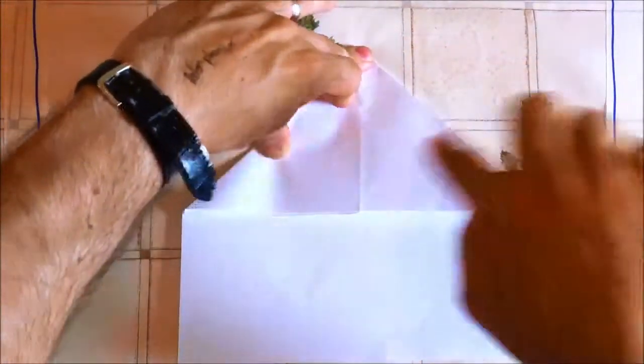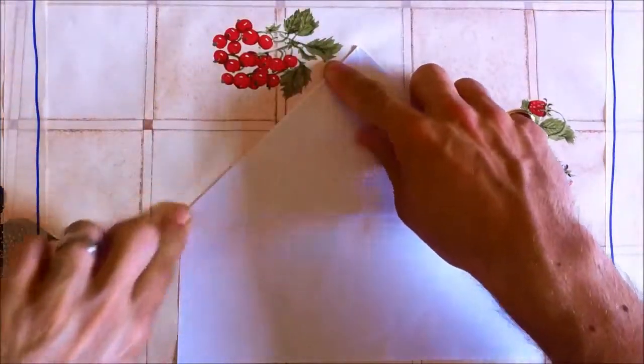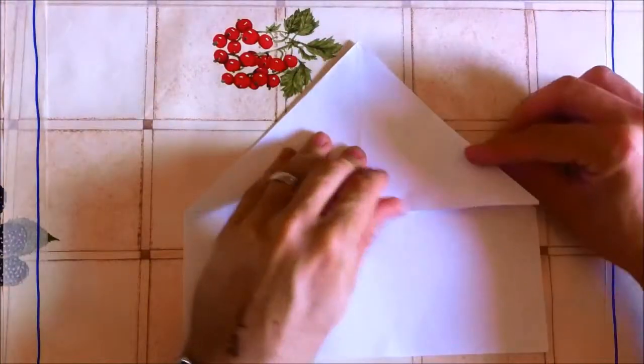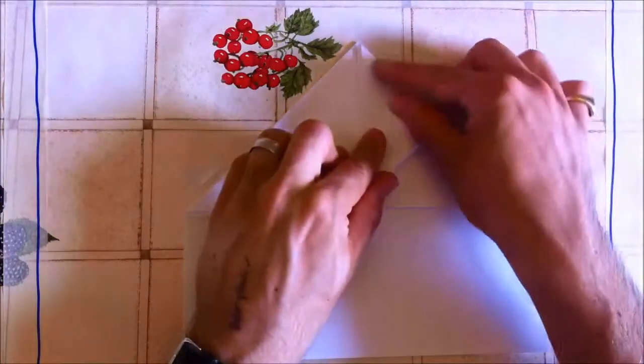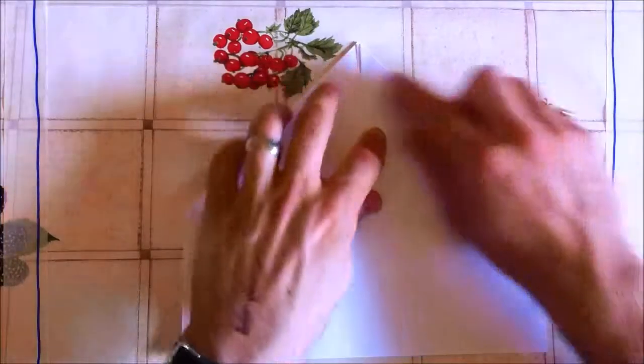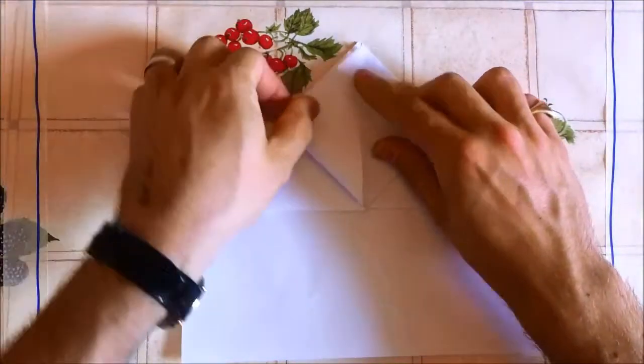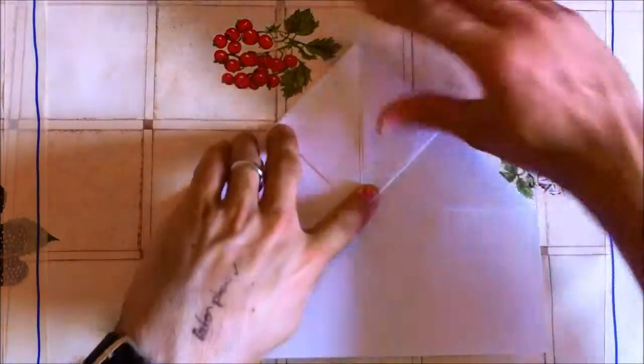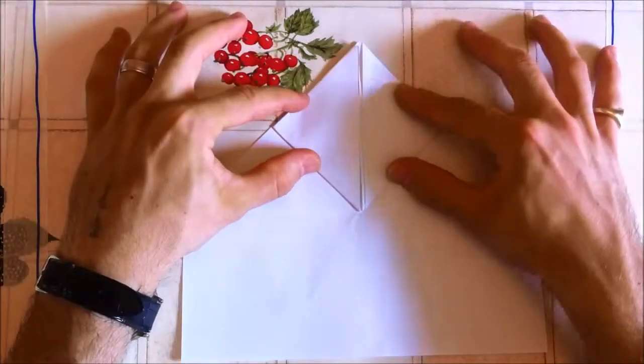Once you've done that, make sure your lines are nice and creased. Then, holding down the middle, take the top flap here and fold it up so it touches the top of your plane. Then, using your finger, smooth along there. Repeat on the other side. Point up to the top, smooth with your finger until you get what looks like a diamond shape at the top there.